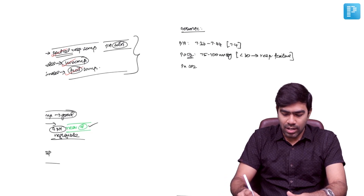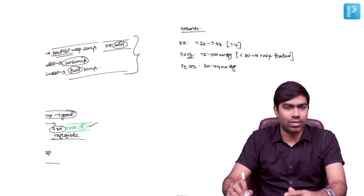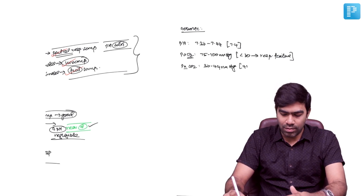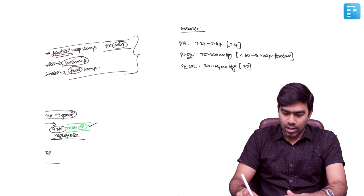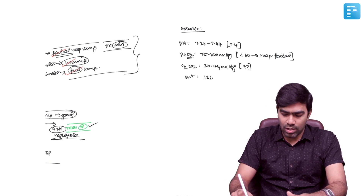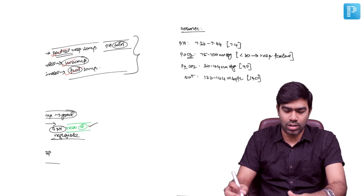Then, arterial carbon dioxide tension is somewhere between 36 to 44 millimeters of mercury. Even though some textbooks give 35 to 45, it doesn't matter. Average, you can take it as somewhere around 40. And for electrolytes, sodium normal is 136 to 144, or 135 to 145 milliequivalents per liter. Average, you can take it as 140.